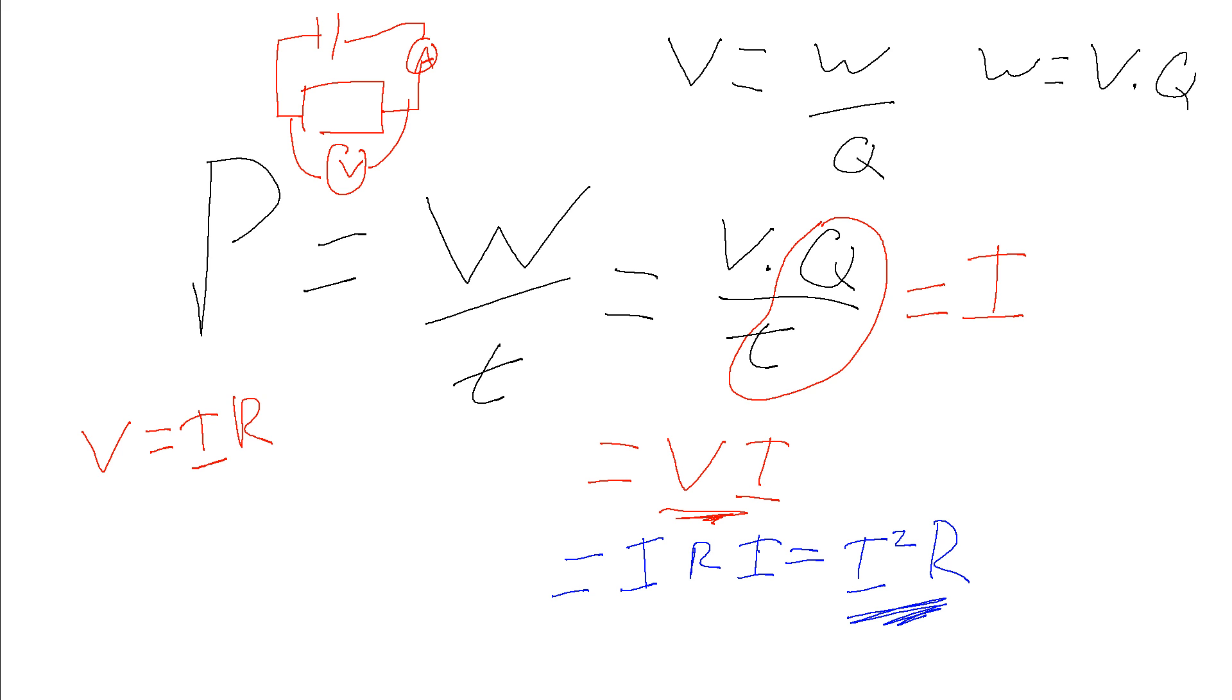There's a final form because what we can do with that P equals VI is instead of substituting for V to get it just in terms of I and R, we can rearrange this for I. And we get I is equal to V over R. So this is also equal to V times V over R, which is V squared over R.